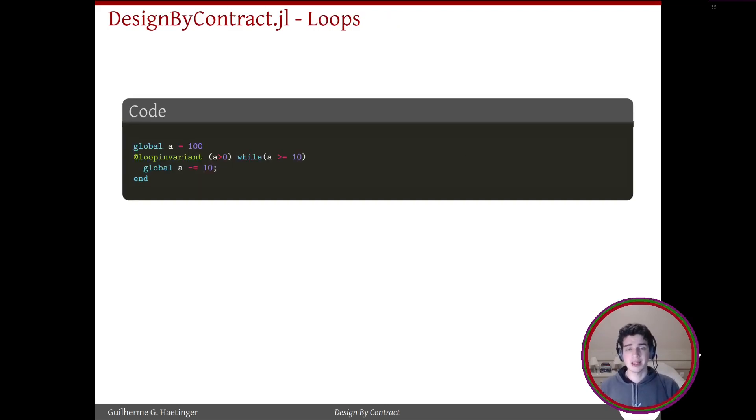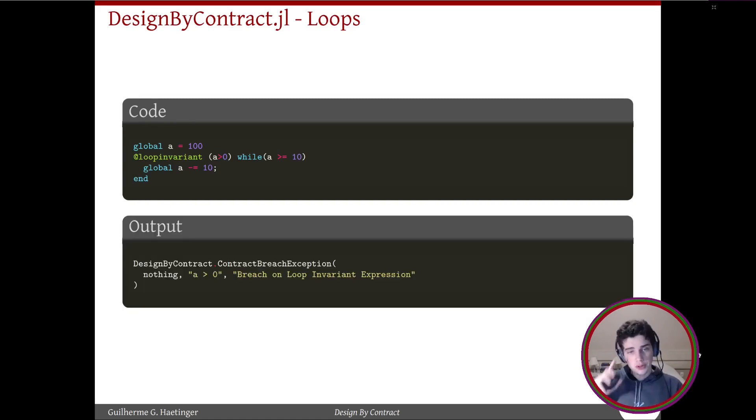A loop invariant has the same idea and at the end of each iteration you'd have a check for the conditions and if one of them breaks, there's a contract breach exception.